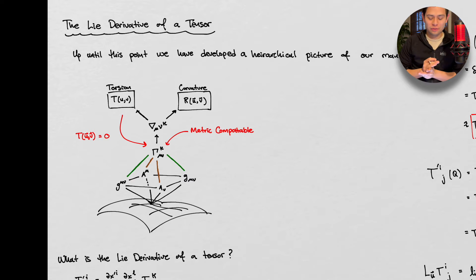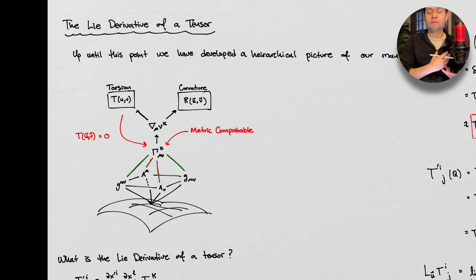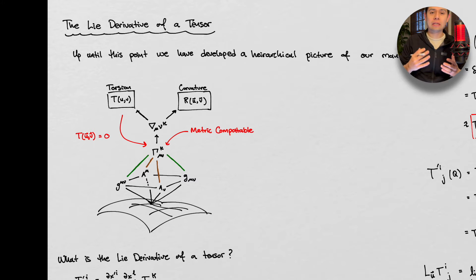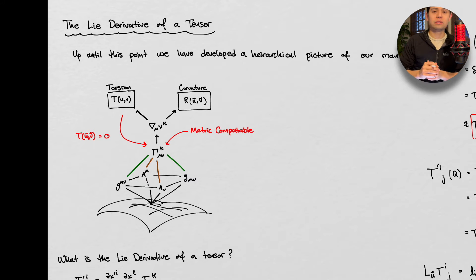All right, hey guys, what's going on? So today we are going to be talking about the Lie derivative of a tensor. In the last video we introduced the Lie derivative, we also introduced the idea of torsion, and now we're going to go from taking the Lie derivative of a vector — which was u in the direction of v minus v in the direction of u — to doing the same thing with tensors. This is going to be a good flow into the next topic, which is the Riemann curvature tensor. Make sure to hit that like and subscribe button, and now let's get into the content.